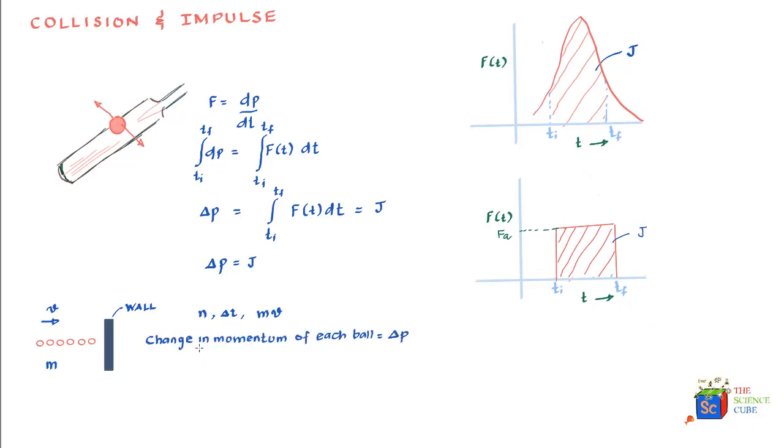Let us also assume that the change in momentum of each ball is delta p. Then what we can say is that the total impulse on the balls is equal to J is equal to n delta p. Because delta p is the change in momentum of one ball, and over a period of delta t, there were n balls. So the total change in momentum during this time interval delta t is n delta p, which is the impulse on the balls. So what is the impulse on the wall? As we understood earlier, the impulse on the wall would be equal and opposite in direction. So impulse on the wall would be minus n delta p.